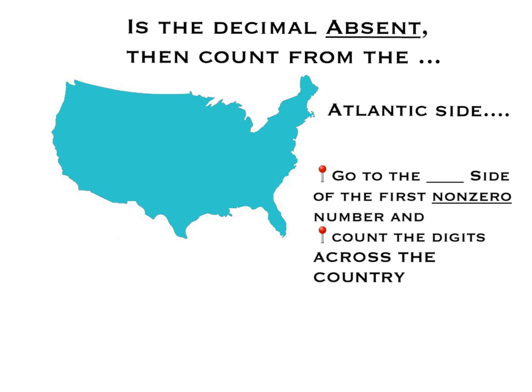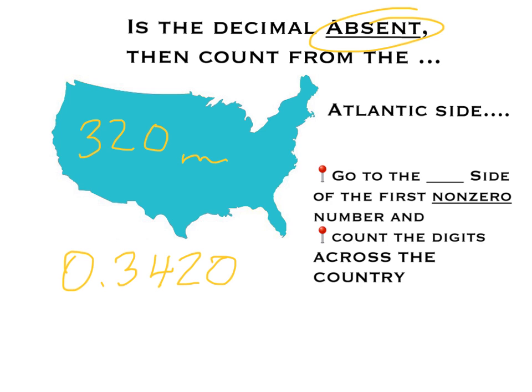If the decimal is absent, count from the Atlantic side. For example, if our number was 320, we go to the Atlantic side of the number and move to the first non-zero number — between the 0 and 2 — and count the digits across the rest of the country toward the Pacific. We would count the 2 and the 3, so 320 has two sig figs.